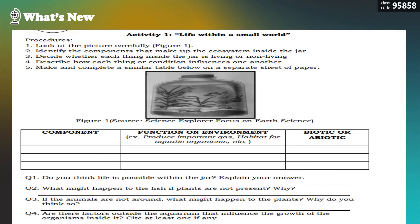Let's have Activity 1: Life Within a Small World. You're given a procedure here. Look at the picture carefully — figure 1. Identify the components that make up the ecosystem inside the jar. Decide whether each thing inside the jar is living or non-living. Describe how each thing or condition influences one another. Make and complete a similar table on a separate sheet of paper.